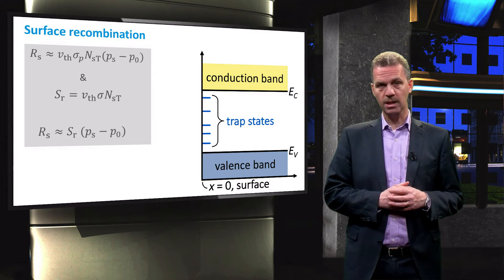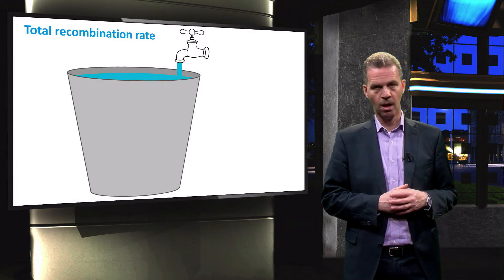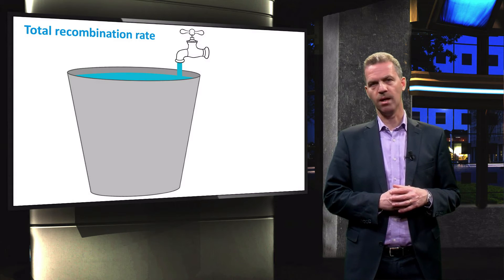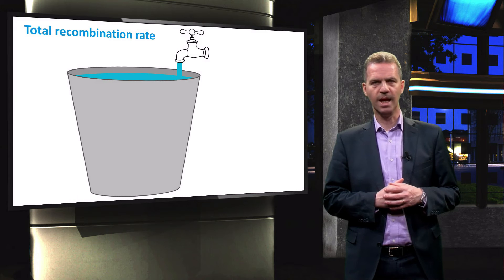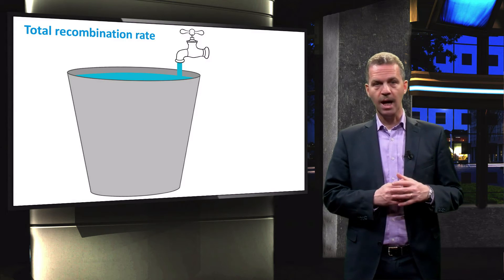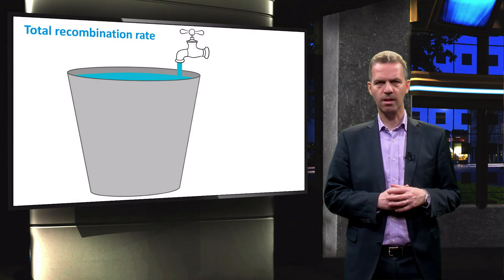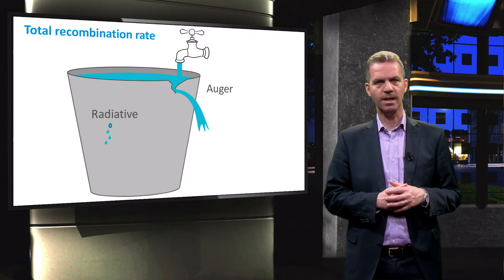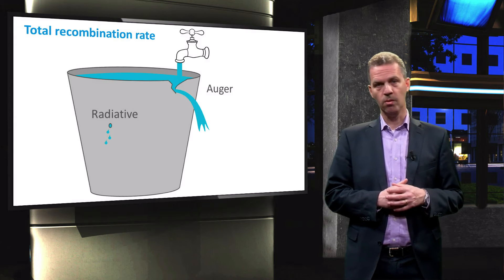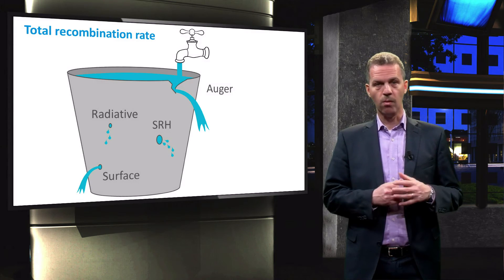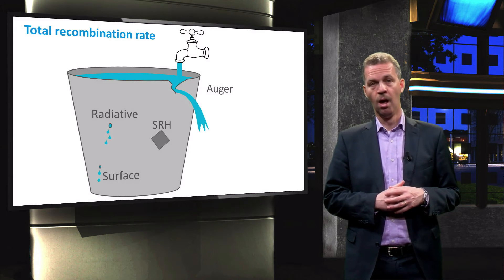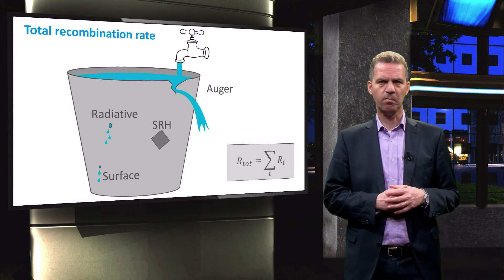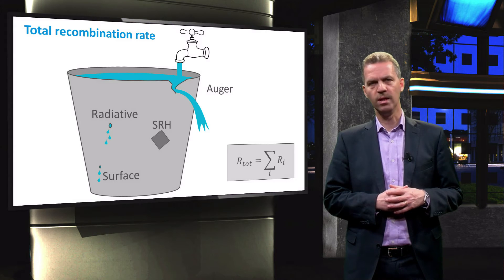In order to understand how the different recombination mechanisms contribute to the total recombination, we consider a bucket that is filled by a tap. The tap is the equivalent of the generation of charge carriers, and obviously when the bucket is full it will overflow. The overflowing water can be considered as the recombination that balances the generation. We have several recombination mechanisms acting at the same time, like Auger and radiative recombination that are always present, but also SRH and surface recombination. With the right processing technologies, we are able to minimize SRH and even surface recombination. The total recombination rate is equal to the sum of all individual rates.